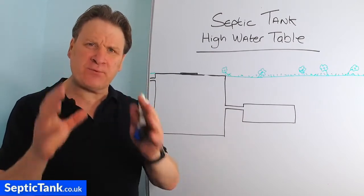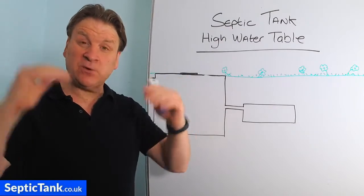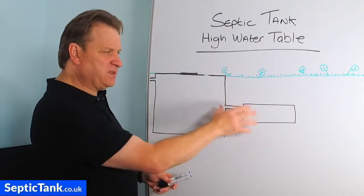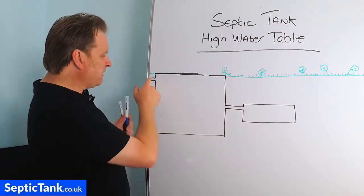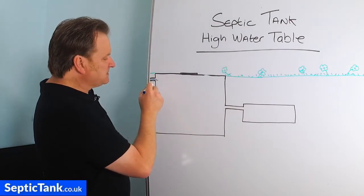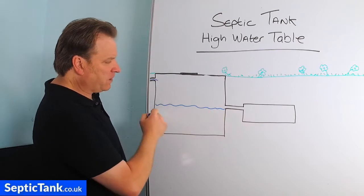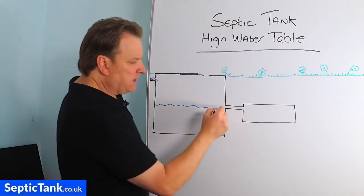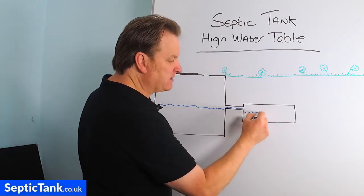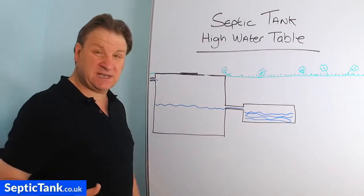Let me show you the problems that come from living in an area where the water table is quite high. So this is your septic tank and this is your soakaway. You've got your inlet pipe and your outlet pipe. Water comes into the septic tank and then it will fill up to a certain level - this is your waste water. It will then normally make its way down the outlet pipe and into the soakaway. That's how a septic tank and soakaway work.